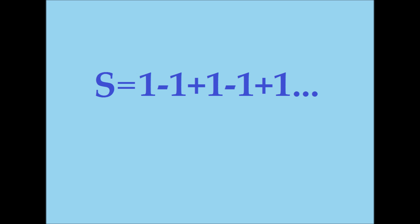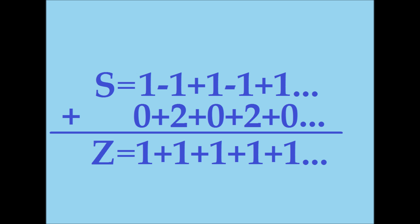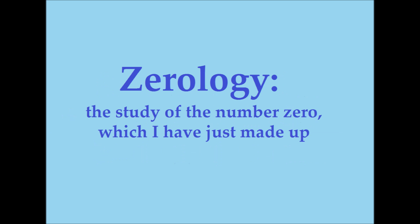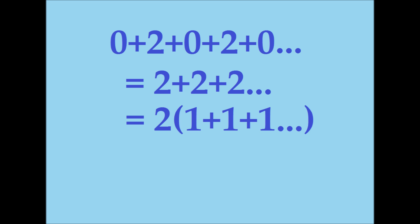Call one minus one plus one minus one plus one, et cetera, s, and one plus one plus one plus one plus one, et cetera, z. To make s equal to z, what would we have to do? We would need to add zero plus two plus zero plus two plus zero plus two, et cetera. Now, anyone with a PhD in applied serology or just a first-grade education knows that zero plus two plus zero plus two, et cetera, is equal to two plus two plus two, et cetera, and this is just two times the quantity one plus one plus one, et cetera, which is z.